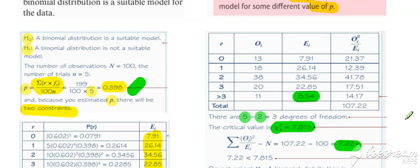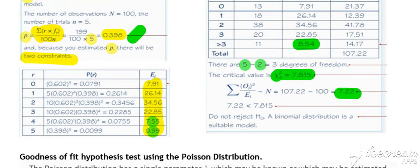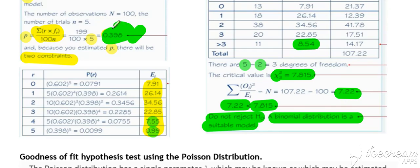We've got our observed goodness of fit statistic versus our critical region, and it's less than our critical region, so we do not reject. This supports the idea that a binomial distribution with a p value of 0.398 is a suitable model for this scenario.